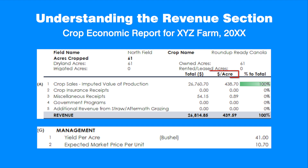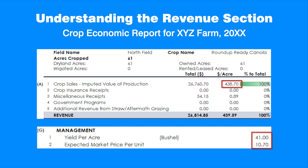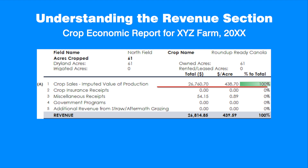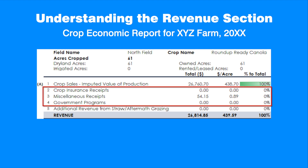Let's examine the revenue section first, using an example for field level production of Roundup Ready Canola in Central Alberta. The sources of revenue are reported as dollars per field and dollars per acre. Yield is reported as bushels per acre. From the example, crop sales are the major source of revenue and account for $438.70 per acre. The canola yield is 41 bushels per acre, with an expected market price of $10.70 per bushel. Other sources of revenue, like receipts from crop insurance, miscellaneous income, and government programs, account for less than 1% of the income and are not substantial for this operation.